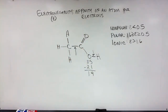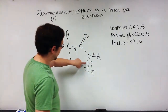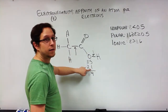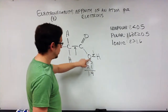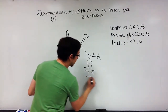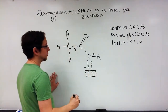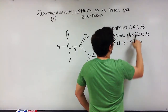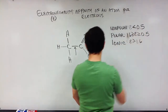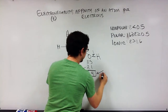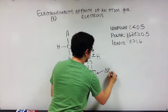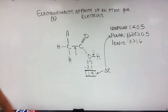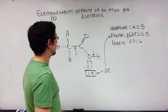So we took 3.5 for oxygen and subtracted 2.1 for hydrogen, giving a difference in electronegativities of 1.4. Where does that fall? That difference falls in the polar range, so this oxygen-hydrogen bond is classified as a polar covalent bond.